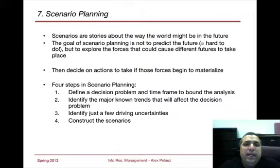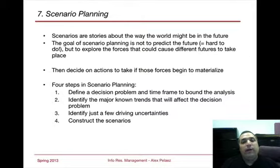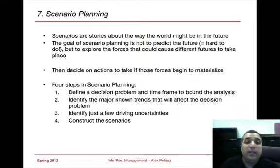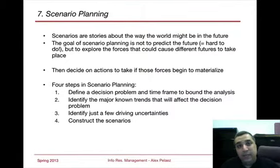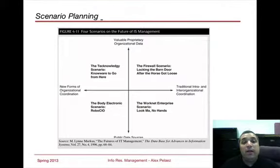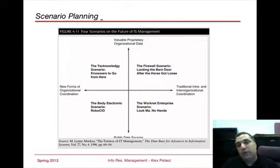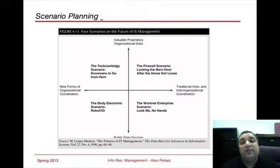In scenario planning, what we focus on is stories about how the world might be in the future. We get everybody together, define a problem, and have a time frame to bound the analysis. We identify the major known trends that are going to affect the decision, then identify some uncertainties, and then everybody begins to develop scenarios. The best scenario planning occurs in disaster recovery, cybersecurity — those are probably the key areas where scenario planning works very well. Sometimes this is overlaid with a risk management model where we identify the probability of an event versus the impact of an event across the same two dimensions.